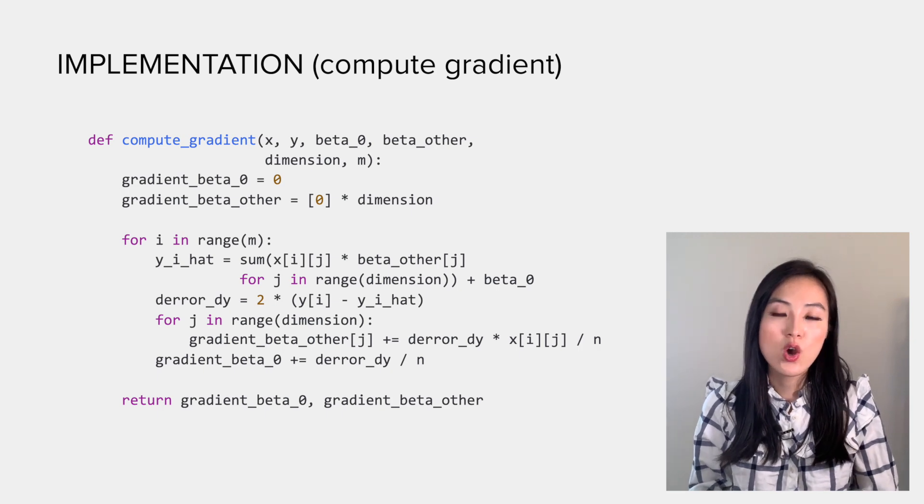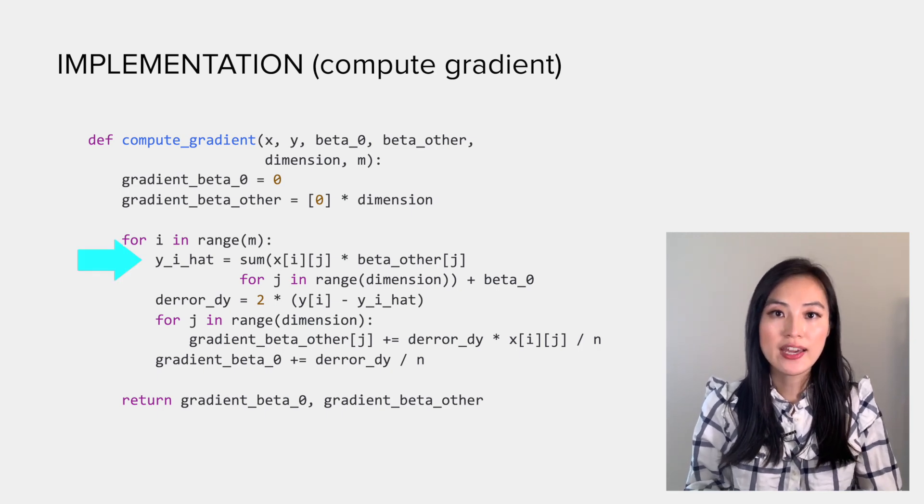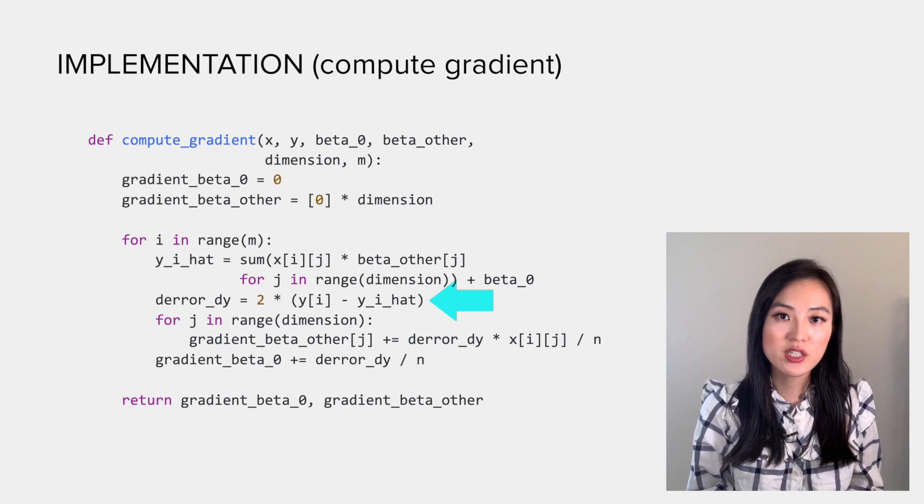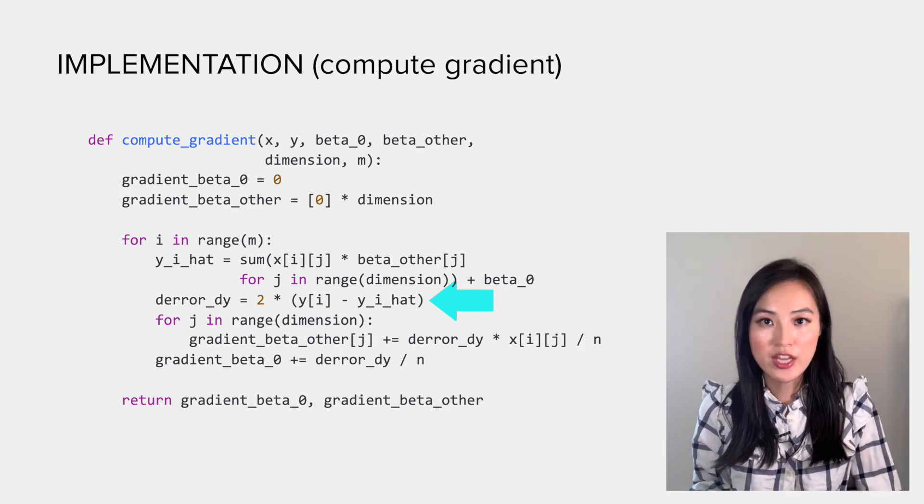Inside the for loop, for each data point i, we obtain the prediction y_i hat, and then we get the difference between the prediction y_i hat and the observation y_i.